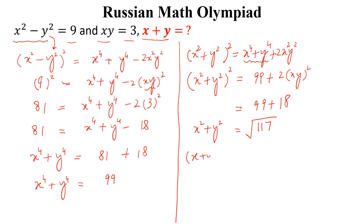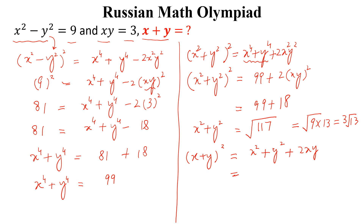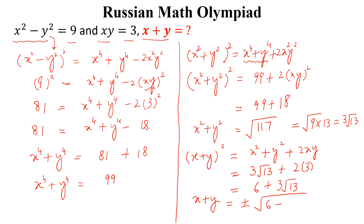Now we know that (x + y)² = x² + y² + 2xy. We have x² + y² = √117 = √(9·13) = 3√13. So (x + y)² = 3√13 + 2·3 = 3√13 + 6. This is the required answer.